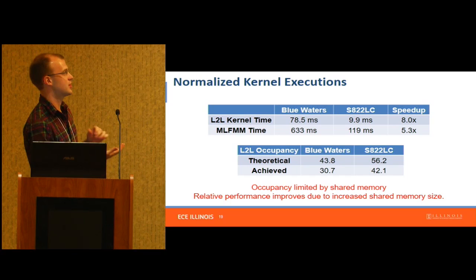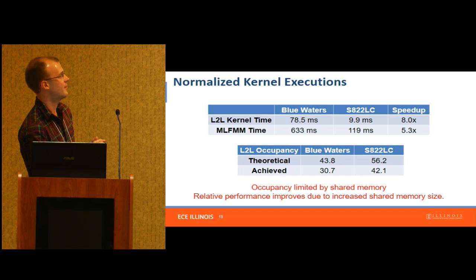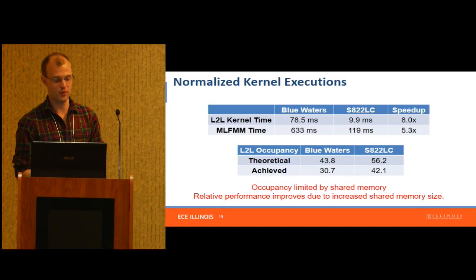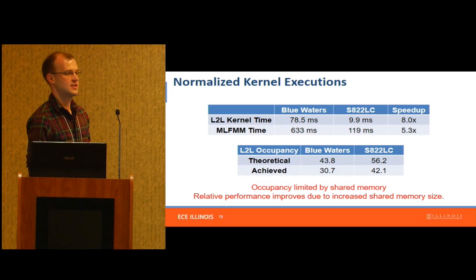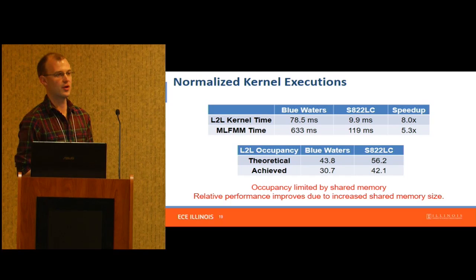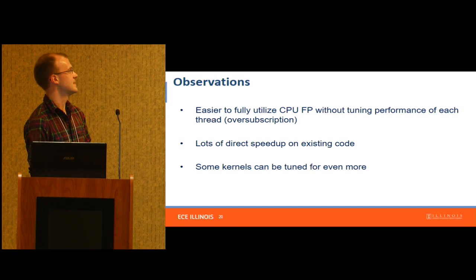I looked at a particular kernel where the average kernel time improved by about five, but this specific kernel sped up by eight — way more than the rest. When I dug into it, it turned out this was another kernel whose occupancy was limited by the amount of shared memory being used — the exact case Simon was talking about. On these new GPUs, the reason it was so much faster is that they have more shared memory available per thread block, so the occupancy was higher.